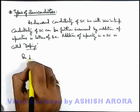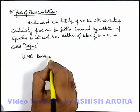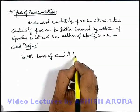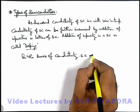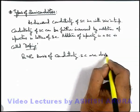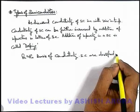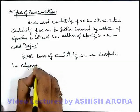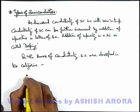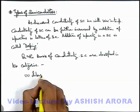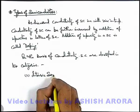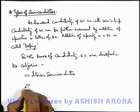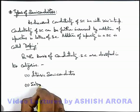On the basis of conductivity, semiconductors are classified into 2 categories. The first one is intrinsic semiconductors, and the second is extrinsic semiconductors.